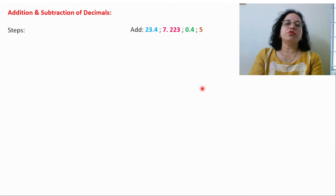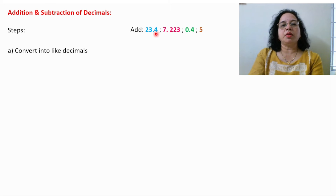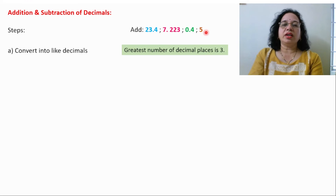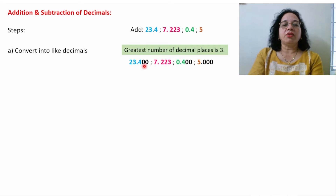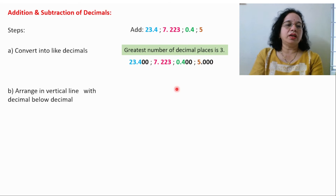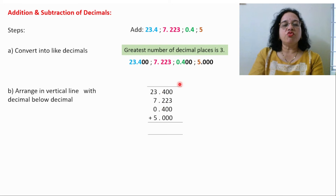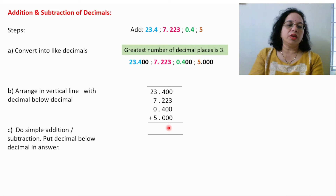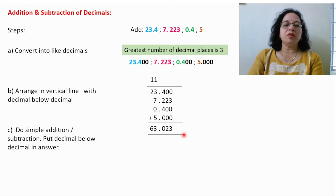Addition and subtraction of decimals. Four decimals are given. The first step is to convert them into like decimals. The decimal places are 1, 3, 1, and 0 — so the greatest number of decimal places is 3. Convert all into 3 decimal places by adding the required number of zeros: 2 zeros, 2 zeros, and 3 zeros. Now arrange the decimals in vertical form, decimal below decimal. Leave one line for carryover. Do the addition and subtraction based on the signs. The answer is 63.023.